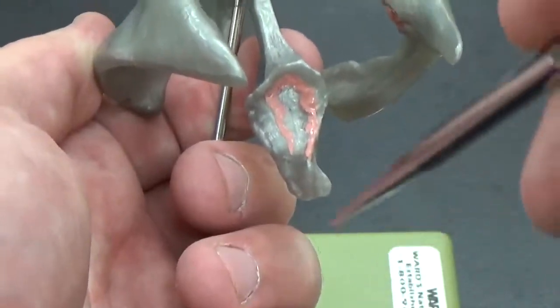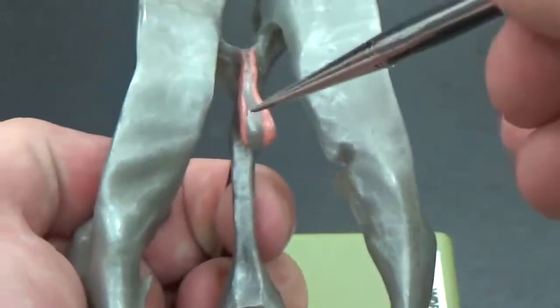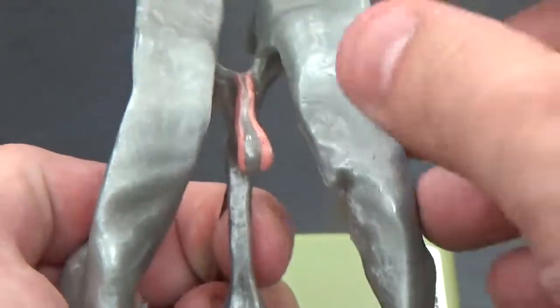From there it'll go down into the spinal cord, that central canal which we discussed earlier. As you can see, the choroid plexus is sitting right up here on top.